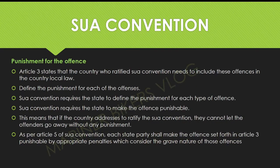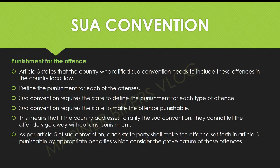Punishment for the offense. Article 3 states that the country which ratified the SWA convention needs to include these offenses in the country's local law and define the punishment for each offense. The SWA convention requires the state to make the offense punishable — meaning offenders cannot be let go without punishment. As per Article 5, each state party shall make the offenses set forth in Article 3 punishable by appropriate penalties which take into account the grave nature of those offenses.